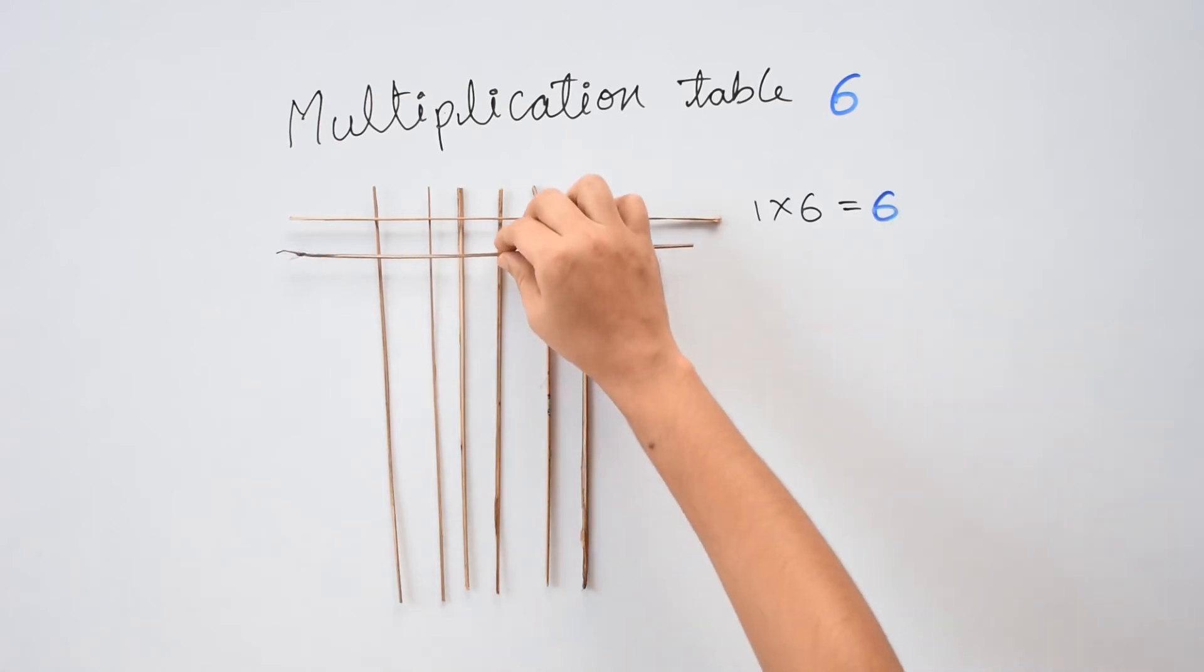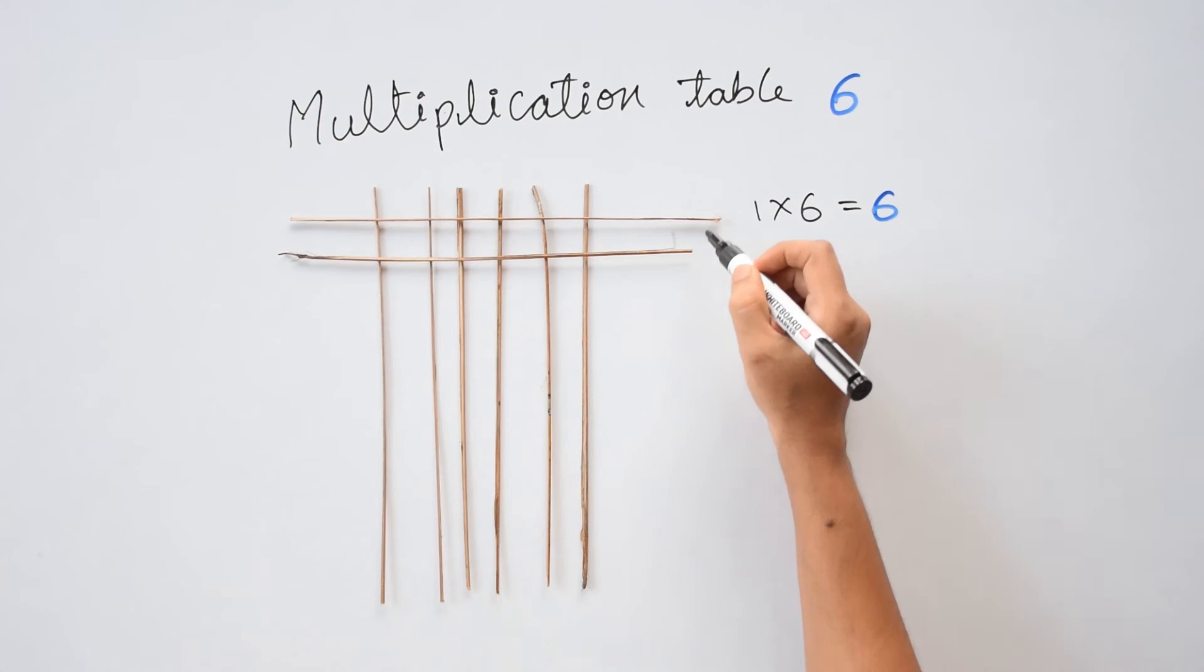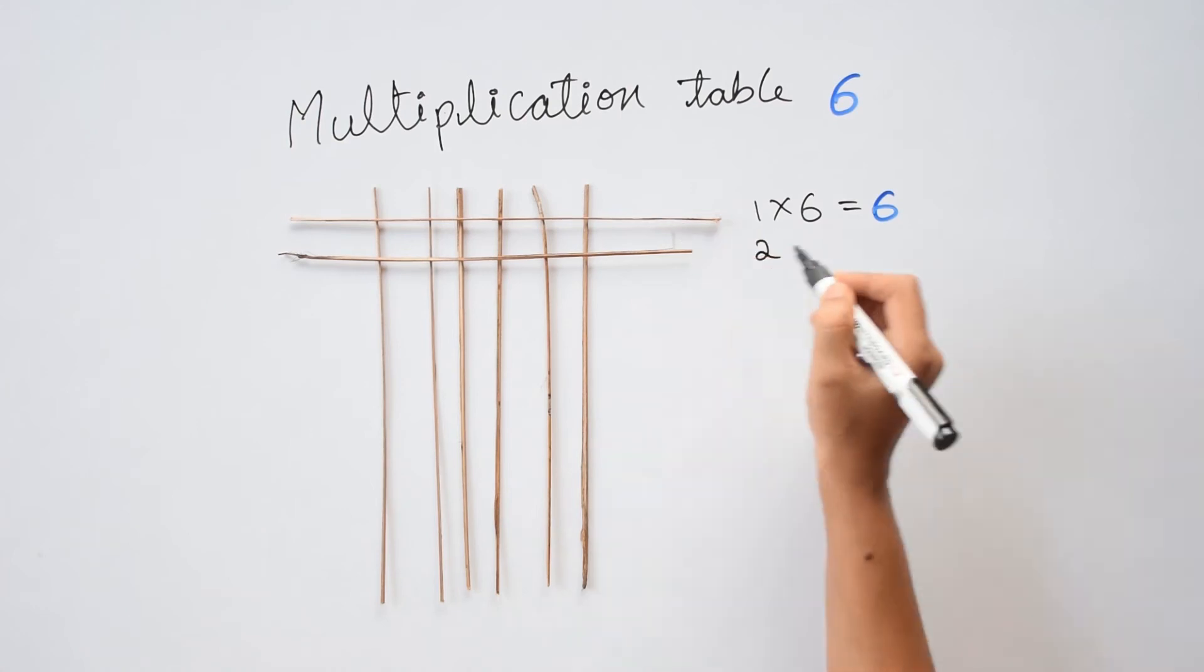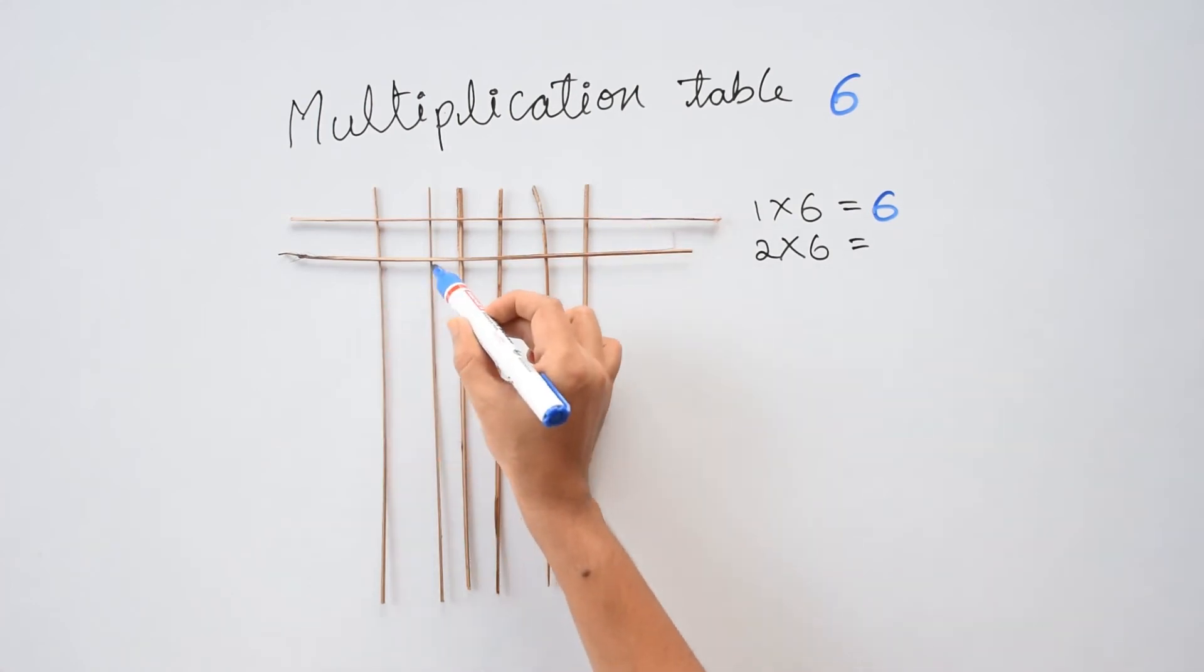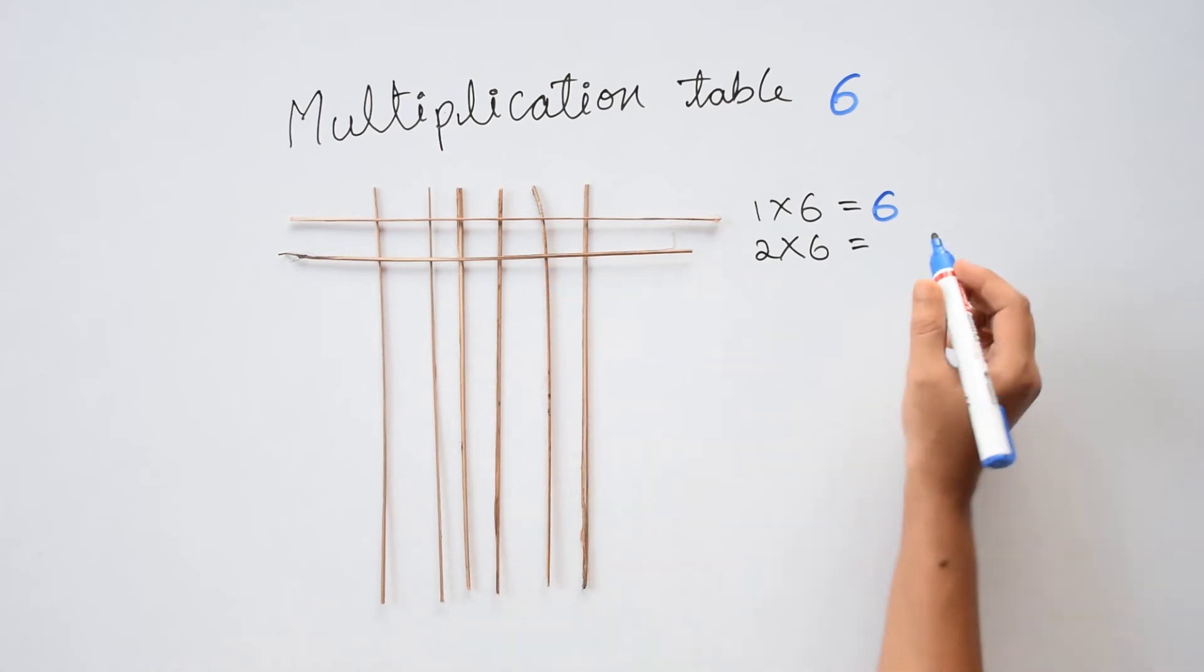The next stick, so 2 sleeping sticks times 6 equals, I am going to count the points where they meet. Till here it's 6, 7, 8, 9, 10, 11 and 12. So 2 times 6 is 12.